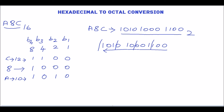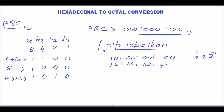Write the individual groups: 101, 010, 001, 100. In the binary number system, the weight for each group is 2 power 0, 2 power 1, 2 power 2 — that is 1, 2, 4 — repeated for each of the four groups.